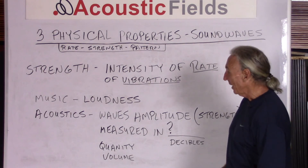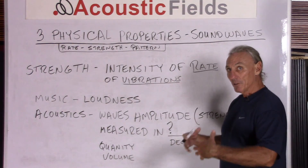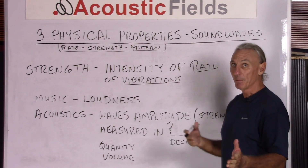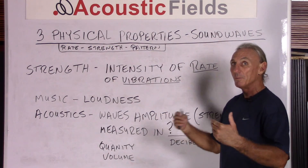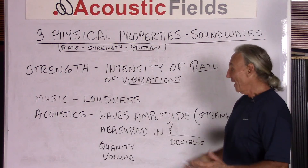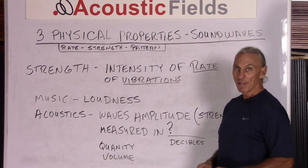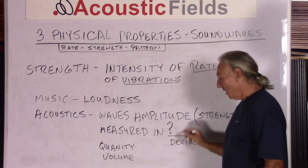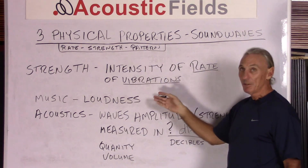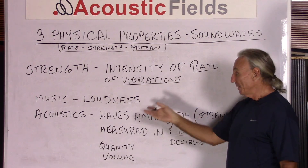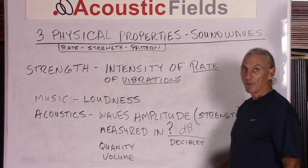In acoustics, strength is wave strength — the amplitude, the gain. How much over an acceptable baseline is it? The acceptable baseline depends on the room: how much energy is in the room based on its volume, how much energy is being worked based on the dimensions, the ratio of height, width, and length. All these factors have to be considered in the analysis. How do we measure strength and amplitude in acoustics? It's in decibels — the common dB that we all know. So in music we perceive strength and call it loudness, while in acoustics it has a whole different process involved.